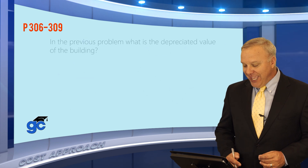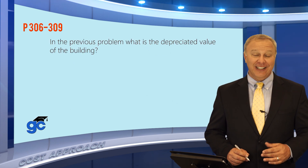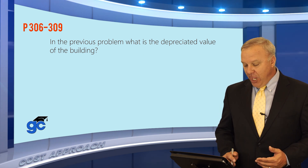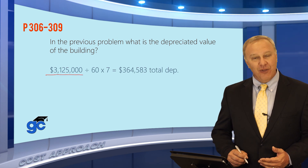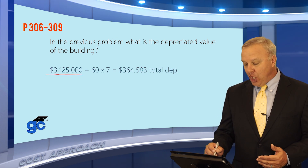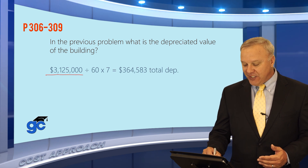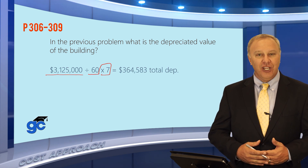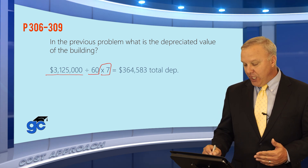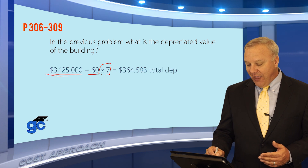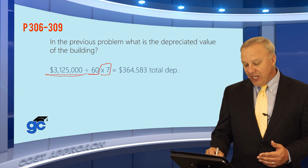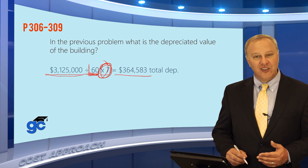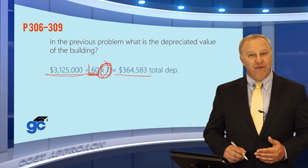In the previous problem, what is the depreciated value of the building? We know the reproduction cost was $3,125,000. The building has an economic life of 60 years and an actual age of seven — it's seven years old but expected to last 60 years. Taking $3,125,000 divided by 60 gives us the annual depreciation; multiplied by seven years, the total depreciation as of this point is $364,583.